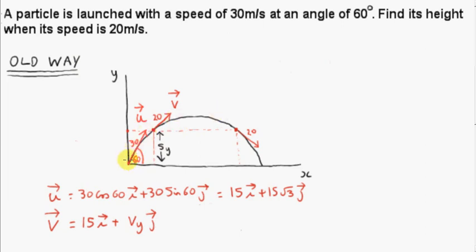Here's the situation. Here's the initial velocity vector u. Let's write it in terms of its i and j basis vectors. We multiply 30 cos 60 for the i component and 30 times sine 60 for the j component. So that gives us 15i plus 15 root 3 times j.